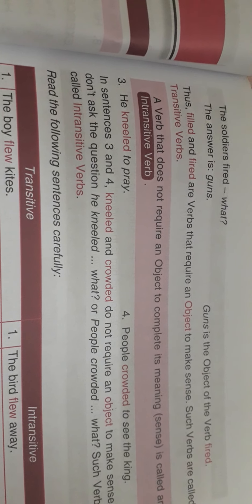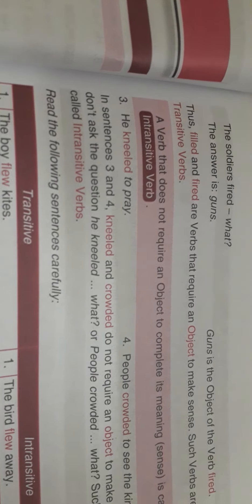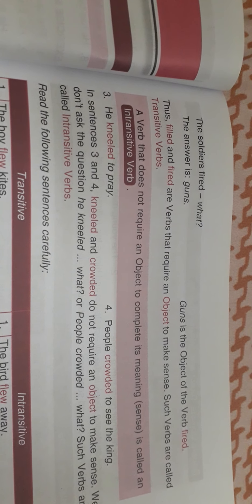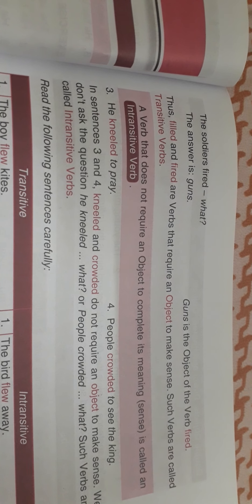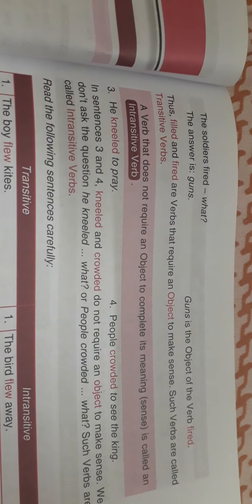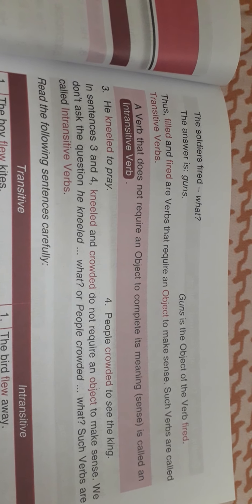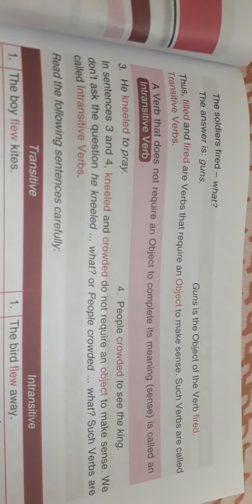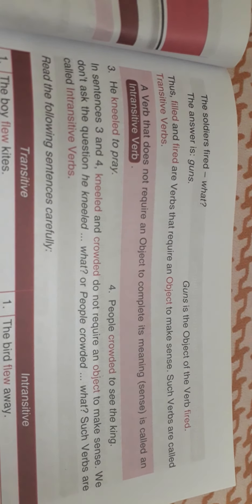An intransitive verb does not require an object to complete its meaning. For example, 'he kneeled to pray' and 'people crowded to see the king.' Here 'kneeled' and 'crowded' do not need an object to make sense. 'He kneeled' is complete on its own — he bent down on his knees to pray. 'People crowded' means people were gathered together. These verbs do not require an object to complete their meaning, so they are intransitive verbs.